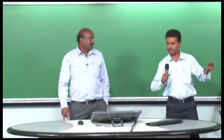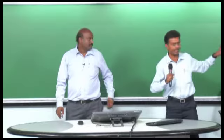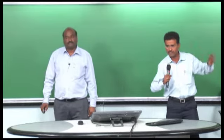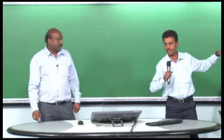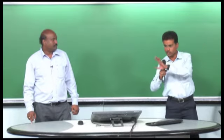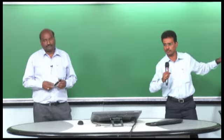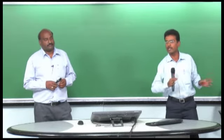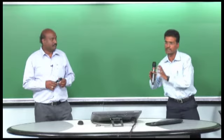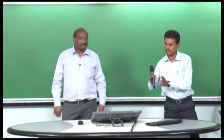To understand hazardous area classification, the fire triangle concept is very much required. The only controllable element is ignition source. If we design our electrical equipment or instrumentation in such a way that it should not become a source of ignition — this is the concept behind hazardous area classification. Why we are doing hazardous area classification is to select proper electrical equipment.